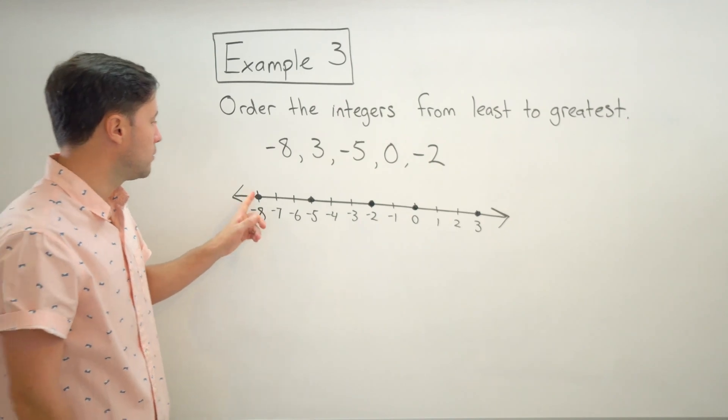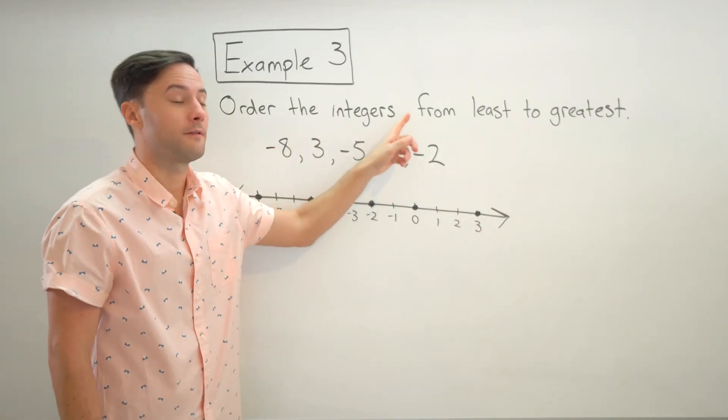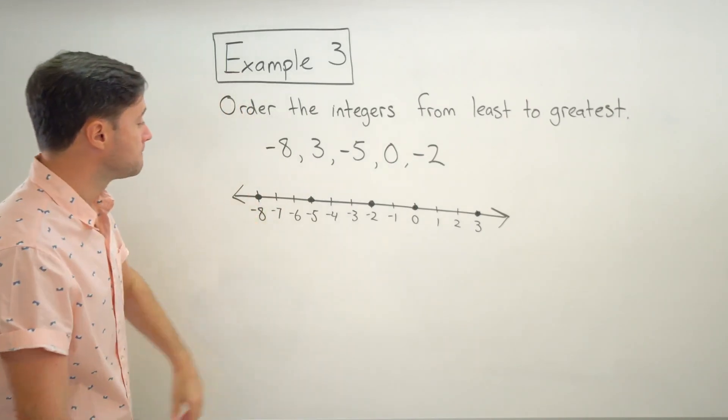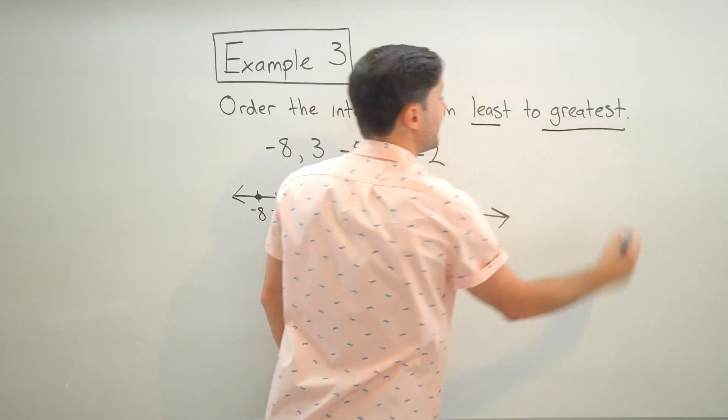So just double checking, five points, five integers. So we're good there. And now I'm just ready to put them in order. I need to go from least to greatest.